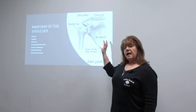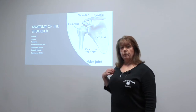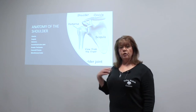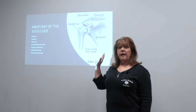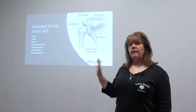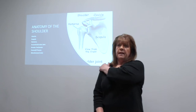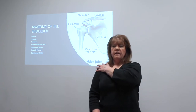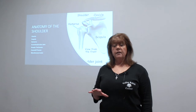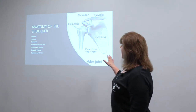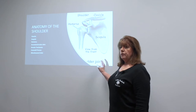The shoulder is actually a free-floating joint. It's only held to your rib cage or to your trunk by muscles. So it's very important that when we're treating a shoulder, we look at the whole shoulder girdle — not just what's happening at the shoulder joint, but everything in the upper back and neck area, because all of those muscles attach to these bones and affect the motion of the shoulder.